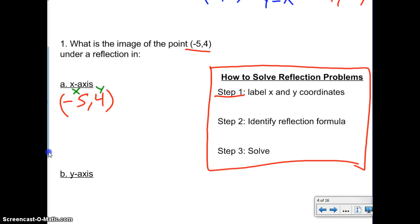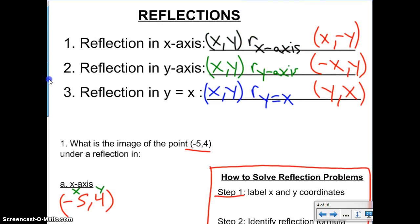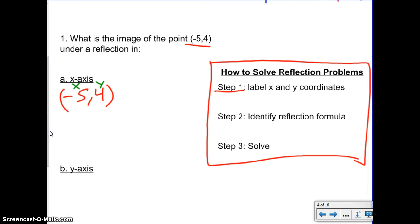Step two is to identify the reflection formula. If you're reflecting in the x-axis, it says (x, -y). So we want to make this (x, -y). Our x stays the same, and now we have a negative y, which gives us (-5, -4). And that's it, that would be step three to solve it.